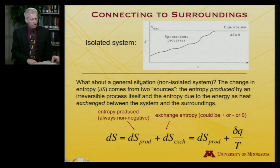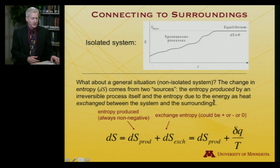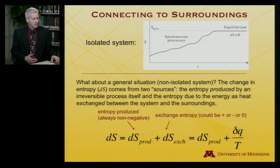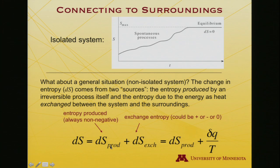What about a non-isolated system? Isolated systems are convenient to think about, but we're often interested in systems that can exchange heat and work with the surroundings. In that case, the entropy change comes from two sources: entropy produced by irreversible spontaneous processes, which is always non-negative, plus entropy exchanged due to heat transfer, δQ/T, which can be positive, negative, or zero depending on the direction of heat flow. So we write dS equals dS_produced plus δQ/T.